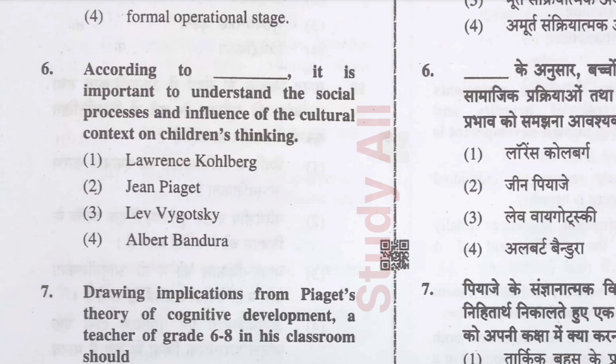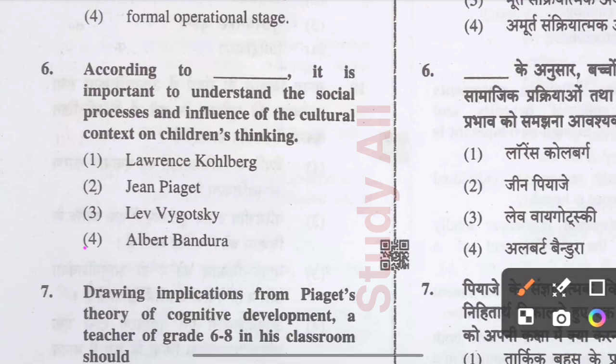Question number six: It is important to understand the social processes and influence of the cultural context on children's thinking — this refers to sociocultural theory. The correct option is option four.